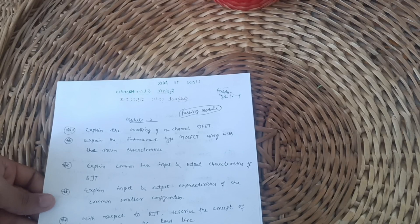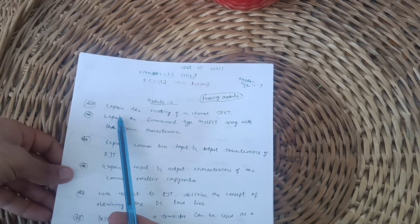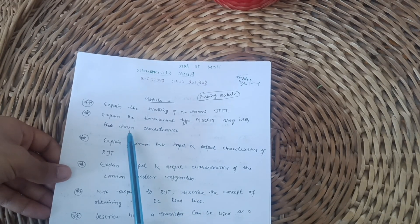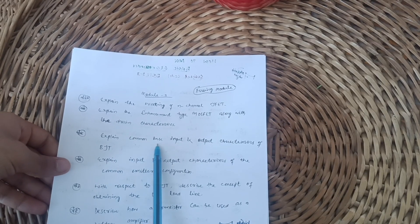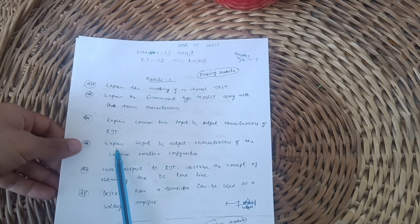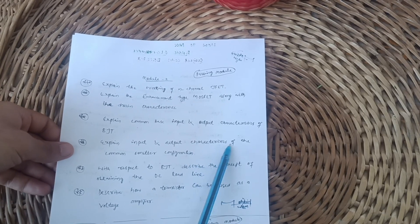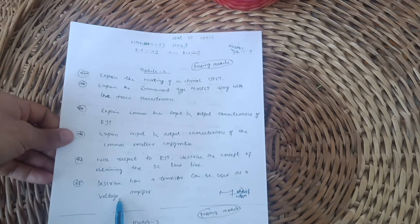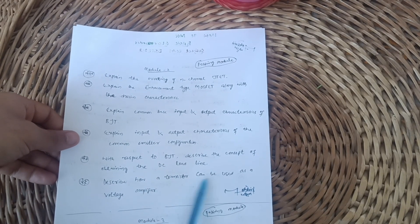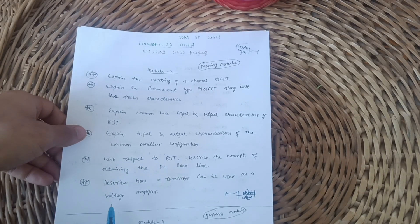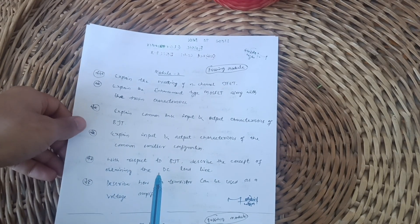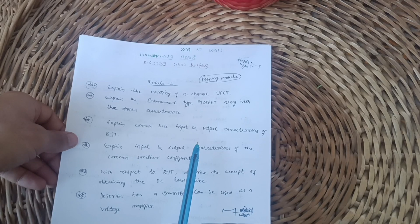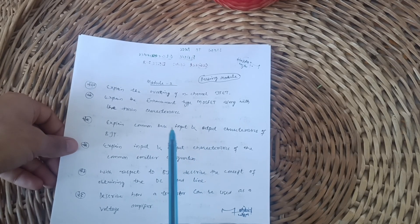Now let us discuss the passing module, which is module 2. You have to cover super important questions like: explain the working of N-channel JFET and explain the enhancement type MOSFET along with the drain characteristics. Also explain common base input and output characteristics of BJT, and explain input and output characteristics of common emitter configuration. With respect to BJT, describe the concept of obtaining the DC load line and describe how a transistor can be used as a voltage amplifier. These are the six important questions from module 2. I call it a passing module as it has mostly theoretical concepts and fewer numericals.